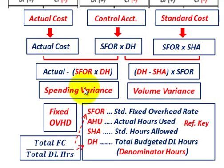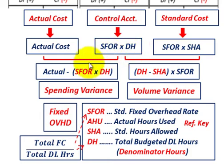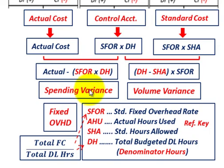For the spending variance, it's the difference between your actual fixed overhead cost and your control account. The control account is SFOR times denominator hours. You subtract SFOR times denominator hours from your actual cost — that difference gives you your spending variance. For our volume variance, we compare the control account to standard cost.